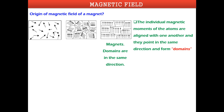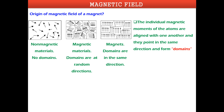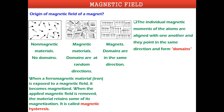But if domains are in random directions, they cancel each other's effect and produce zero net magnetic field. Don't confuse magnetic material with a magnet — a magnetic material is one that can be attracted by a magnet, like iron, cobalt, or nickel. In non-magnetic materials such as plastic, wood, or paper, atoms behave individually with magnetic moments in random directions, so they cancel each other and there is no net magnetic field.